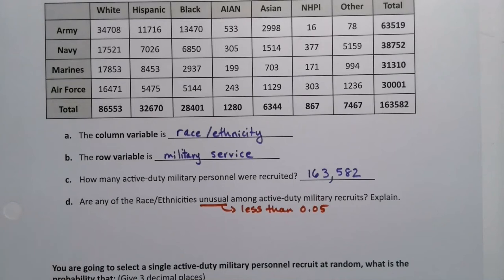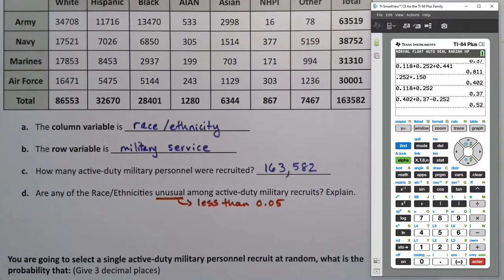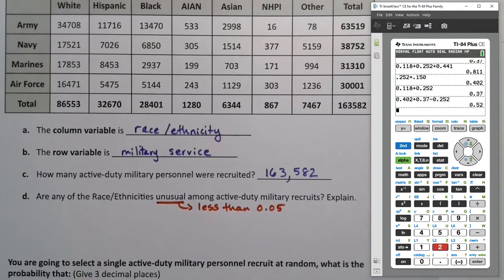So we want to grab a calculator, and we want to figure out what the values are here. So let me start with AIAN, which I imagine is probably unusual. I mean, just for fun, I can grab a big one. So I could grab 28,401, which was black, and divide that by 163,582, which is the grand total. Yeah, see, well over 5%. What about the other, 7467? Divide that by 163,582. That's unusual. Okay, so once I know that one's unusual, I know all the other ones must also be unusual because they're all smaller numbers than 7467.